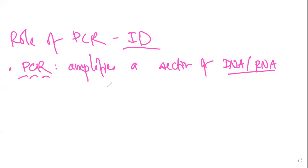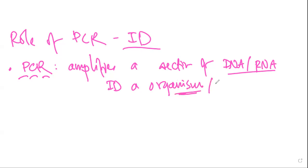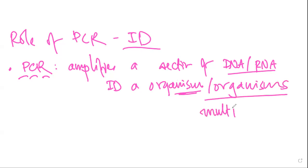PCR amplifies a section of DNA for the identification of a specific organism or organisms. When PCR is used to detect multiple organisms at a single test, it is called multiplex PCR. Multiplex PCR can detect multiple organisms in a single PCR test.